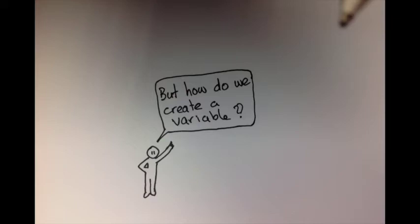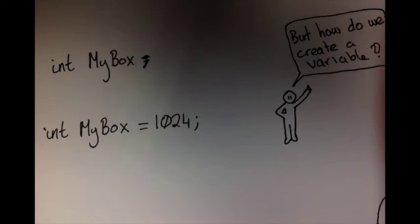So how do we create a variable? A variable we first say a type for the variable and then we give it the name followed by semicolon. So this is saying create me a variable in memory or give me a box in memory to hold an integer, a whole number. We can also combine the line from the previous example, so saying I want a variable called my box of type integer and I want you to put an initial value in of 1024.